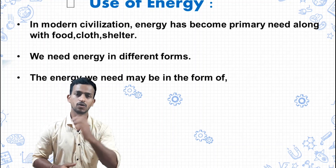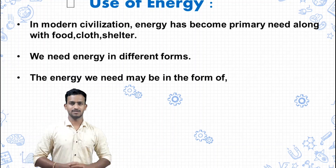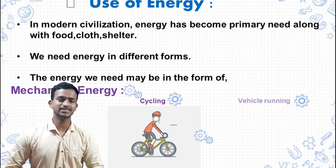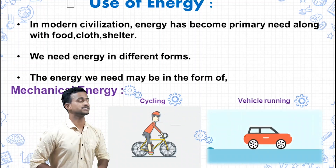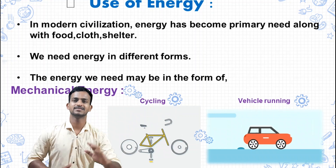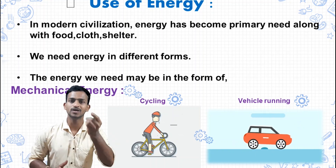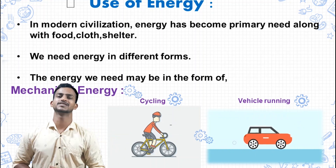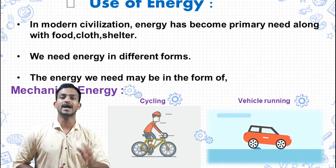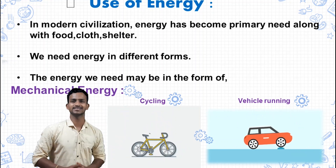Now we will see these energy forms with examples. First is mechanical energy, and two examples are given here: a running cycle and a running motor vehicle. In this cycle and in this motor vehicle, different mechanical tools and mechanisms are used, and with the help of these, mechanical energy is generated, which makes these two vehicles run.